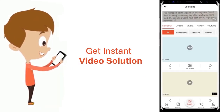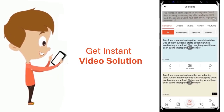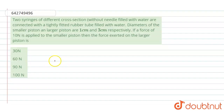The question here is: two syringes of different cross-sections without needle, filled with water, are connected with a tightly fitted rubber tube filled with water. The diameters of the smaller piston and larger piston are 1 centimeter and 3 centimeters respectively. If a force of 10 newtons is applied to the smaller piston, then the force exerted on the larger piston is?